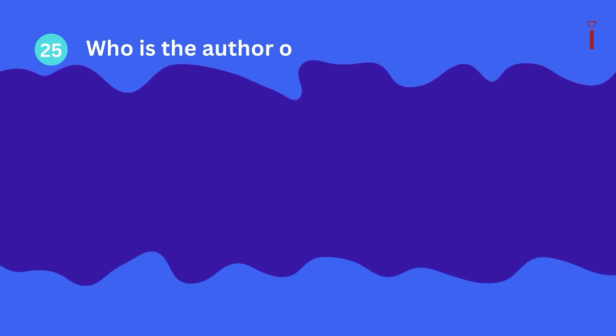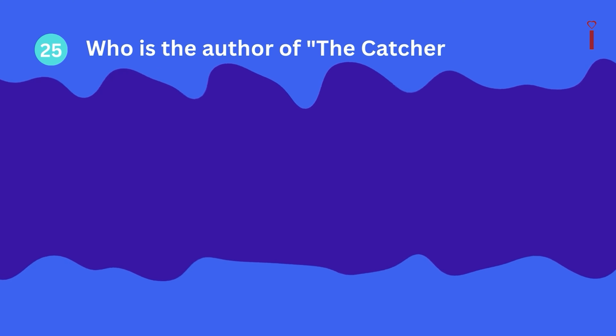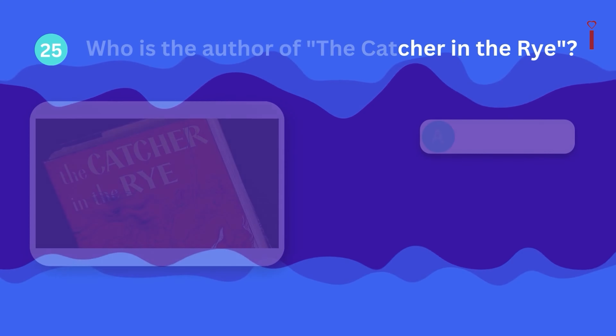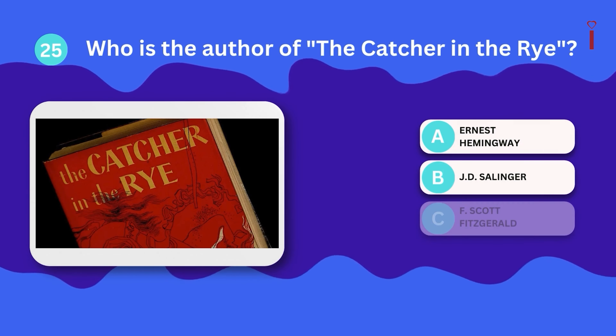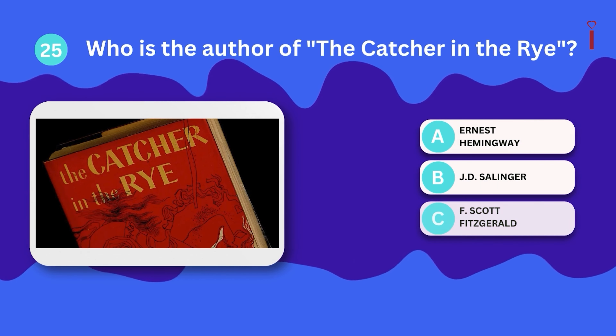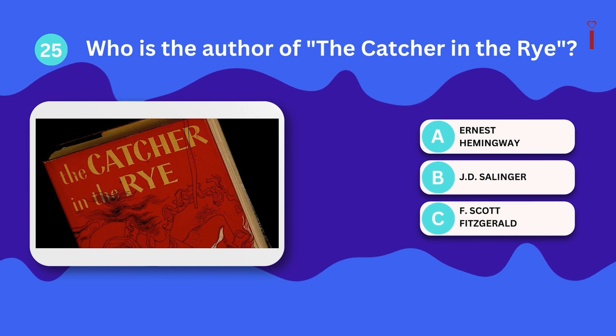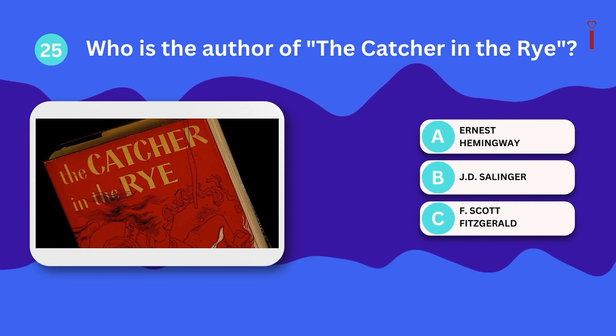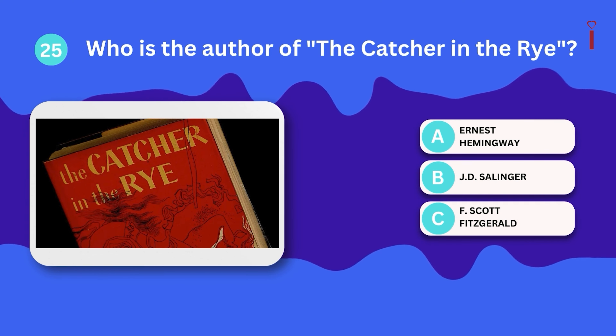Question 25: Who is the author of The Catcher in the Rye? A. Ernest Hemingway, B. J. D. Salinger, C. F. Scott Fitzgerald?